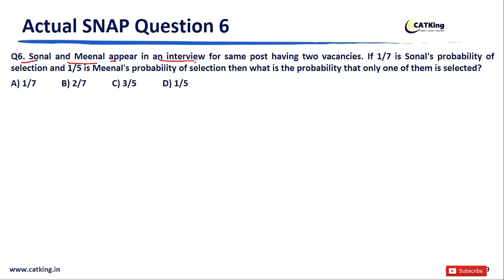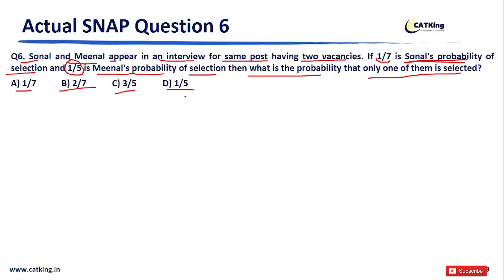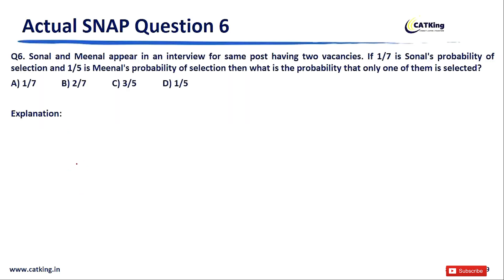Let's move on to the last question, Question 6. Sonal and Meanel appear in an interview for the same post having two vacancies. Sonal's probability of selection is 1/7 and Meanel's probability of selection is 1/5. What is the probability that only one of them is selected? Options: Option A: 1/7, Option B: 2/7, Option C: 3/5, Option D: 1/5. Please pause and try to solve this on your own.